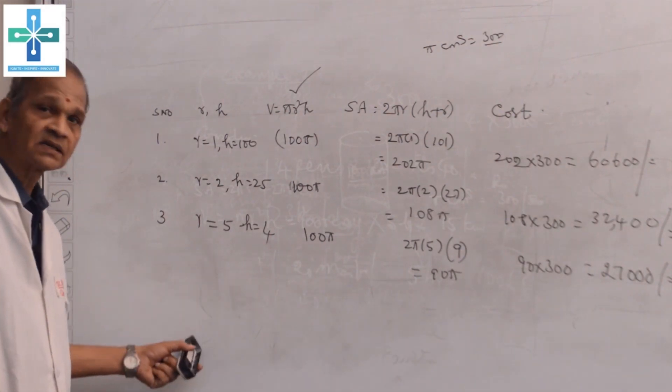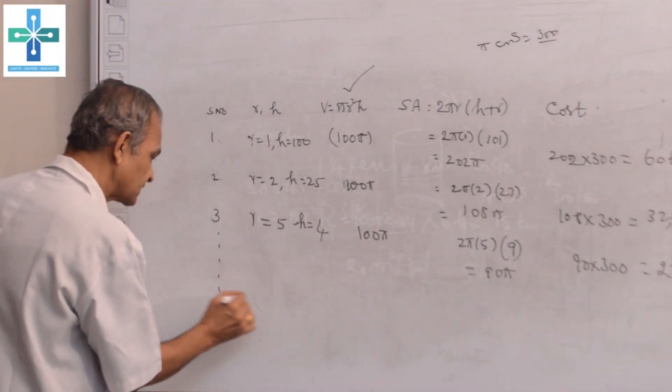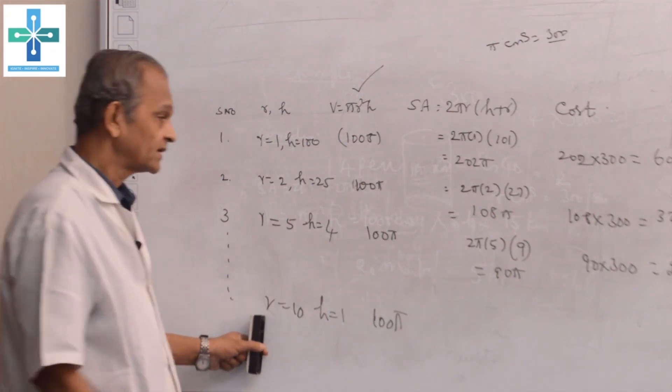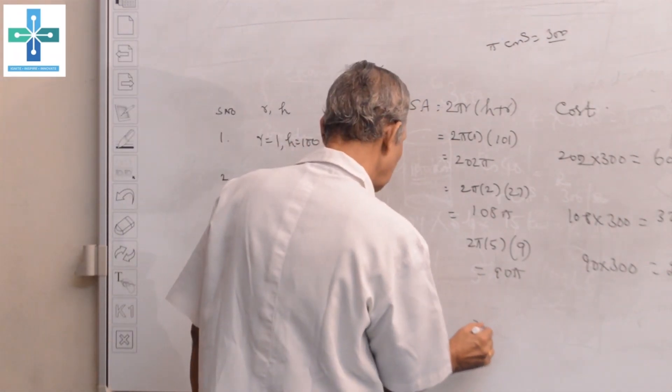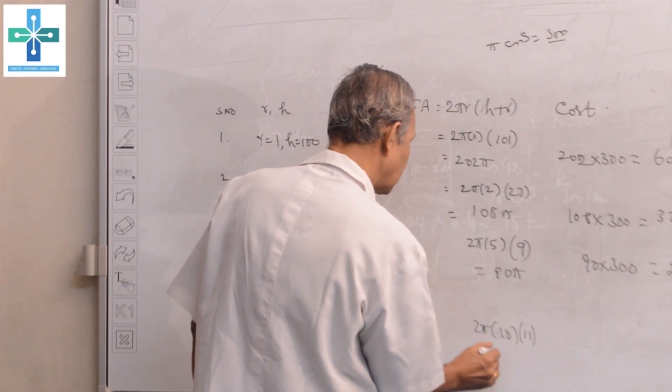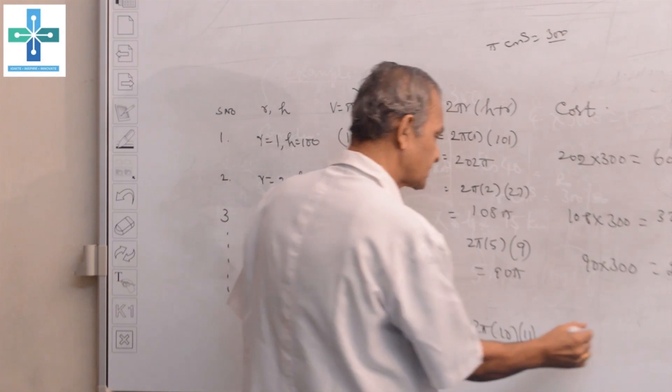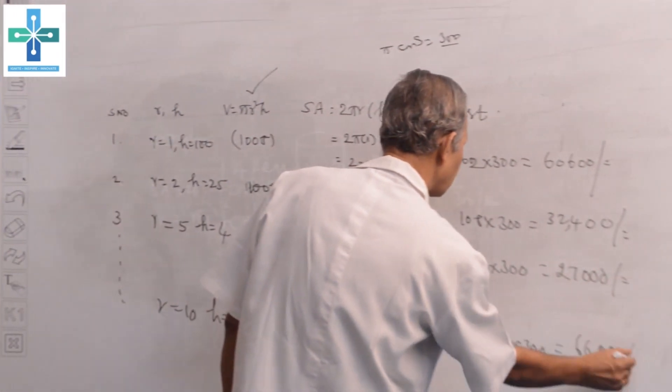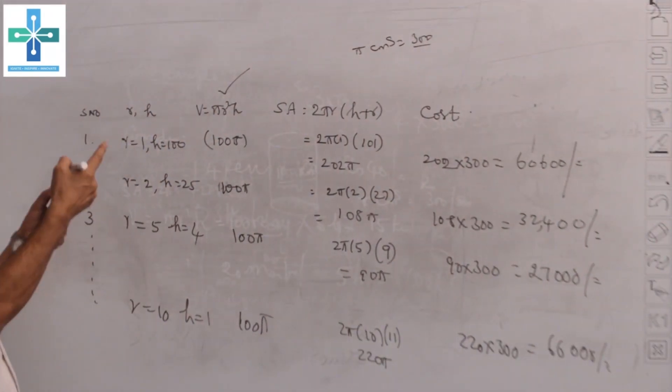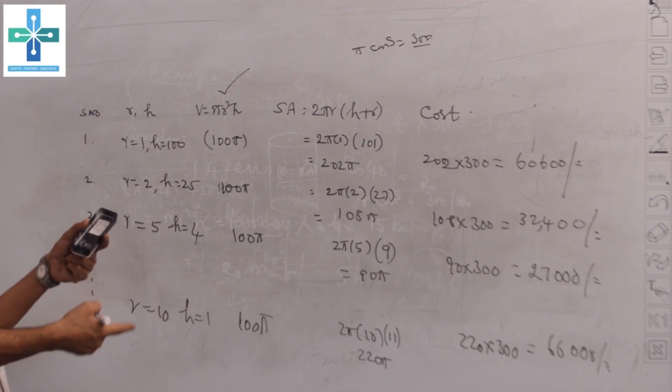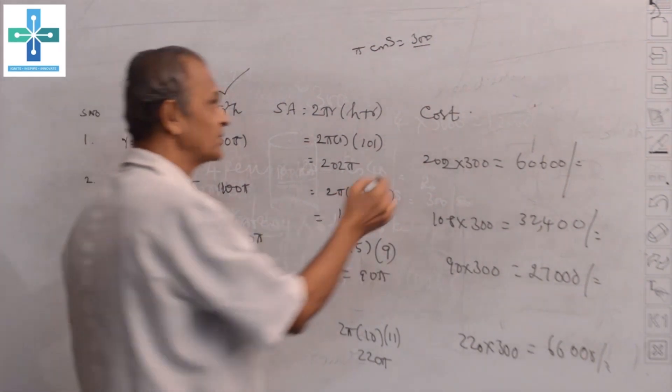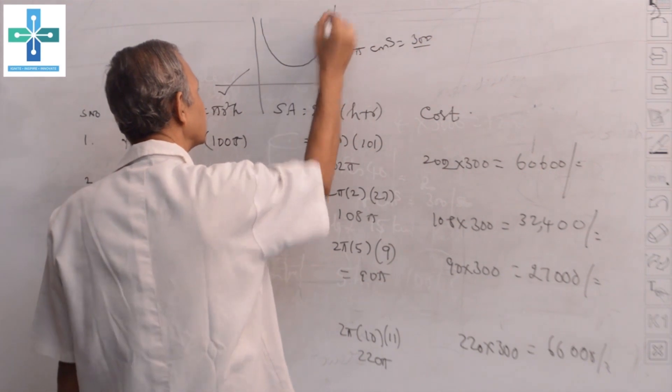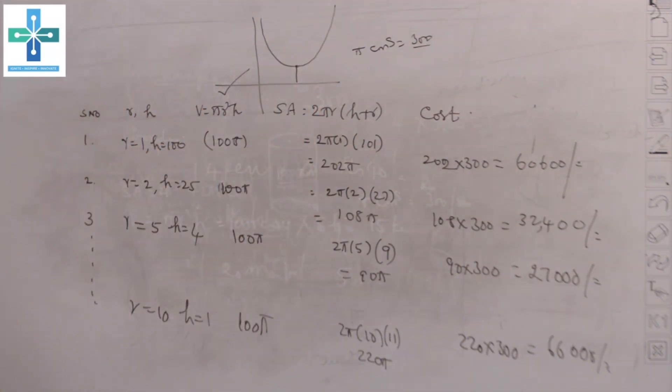But what is the minimum cost? We cannot go on test like this. Suppose if I take r = 10 and h = 1, once again I get 100π. The cost will be 2 into π into r, h + r is 11, that is 220π equals 220 into 300 equals 66,000 rupees. Therefore, again it is increasing. The cost is decreasing at one stage and again increasing.